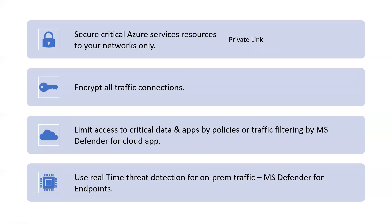Next, we are securing our critical Azure service resources to our virtual networks only. Use Azure Private Link to access Azure PaaS services like Azure Storage or SQL databases over a private endpoint within your virtual network. Private endpoints allow us to secure critical Azure service resources so that only our virtual network traffic can reach them. Traffic from our virtual network to the Azure service always remains on the Microsoft Azure backbone network, so exposing your virtual network to the public internet is no longer necessary to consume Azure PaaS services. Wherever possible, go with Private Link.